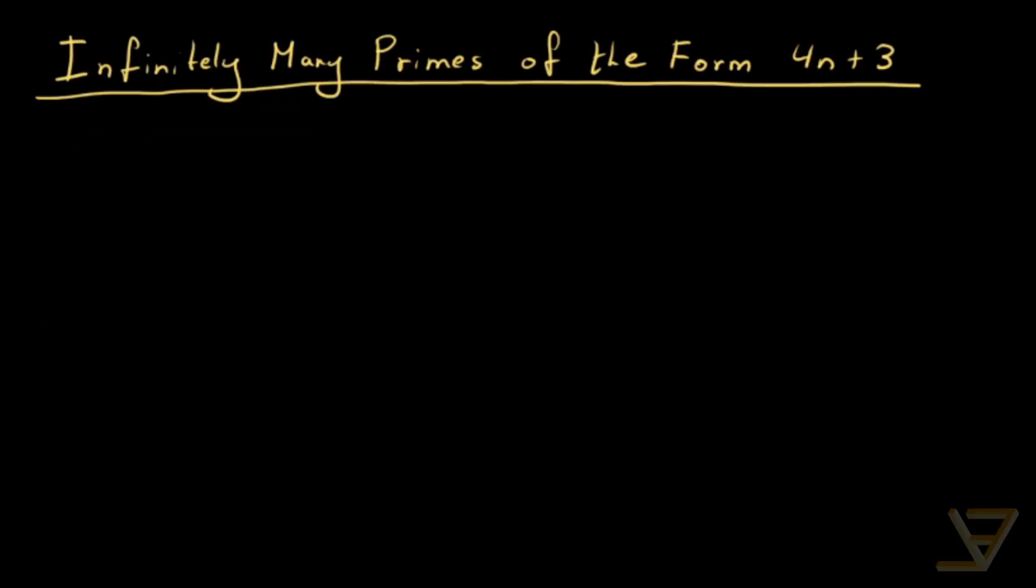Hi everyone, let's prove that there are infinitely many primes of the form 4n+3. We're going to be proving this by contradiction, so suppose there exists finitely many primes of this form.